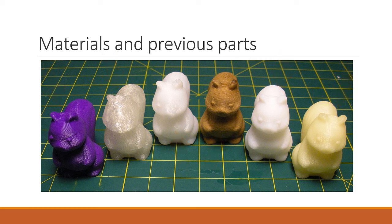One final consideration when looking at a printer is what parts it's created previously. If you know you need something with a high degree of detail, see if the printer has created similarly detailed parts before. Look at previous parts for warping, discoloration, or anything else that's important to you. Compare them to the design that was supposed to be printed, and if you can, talk to the people that printed them. If you can't find previous parts, look online on hobbyist websites for people who have used the same printer. Avoid the manufacturer's website — they know their printers very well and they'll only post the best pictures.